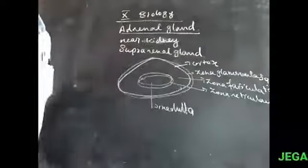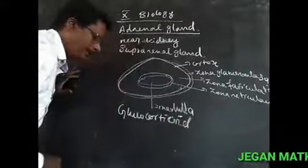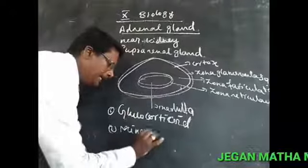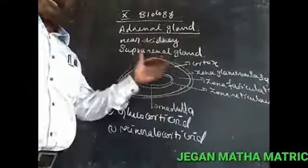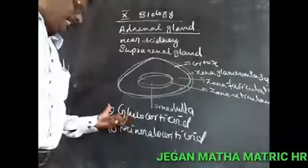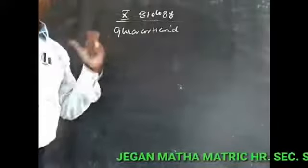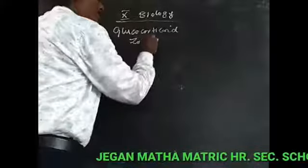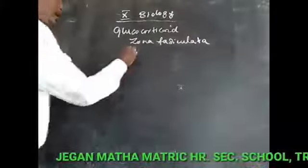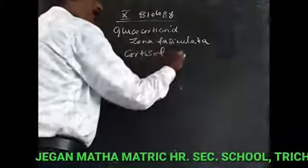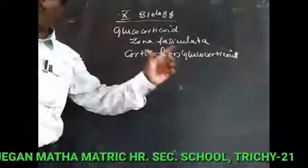The three zones secrete two types of hormones. One is called glucocorticoid and the second one is called mineralocorticoid. The glucocorticoid is secreted from the zona fasciculata, and it is also called cortisol.